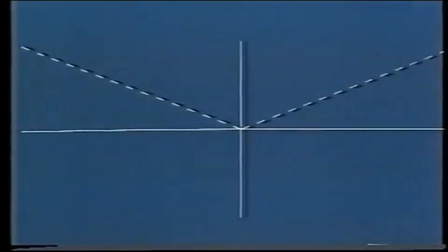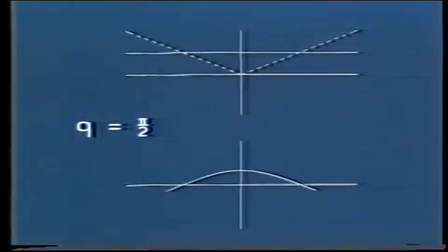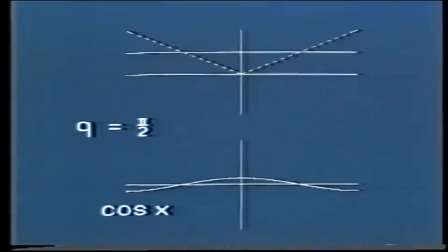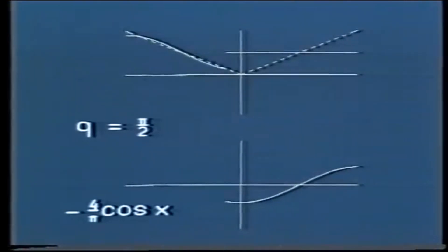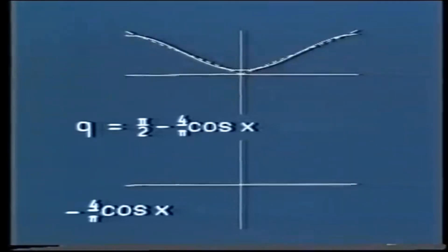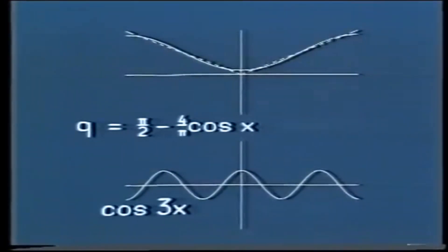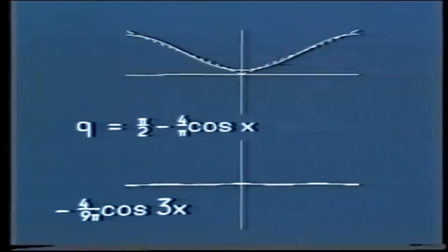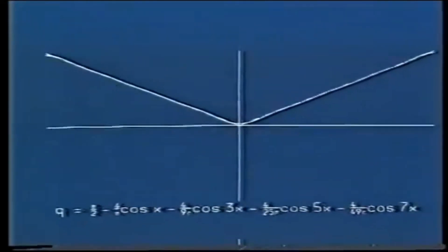So this is our expression for q, approximating the function mod x. Let's see what it looks like. This is the function mod x, and this is a first approximation: pi over 2 times the function 1. A function orthogonal to this is cos x. Multiply by minus 4 over pi, the Fourier coefficient. Adding gives a better approximation — the one we had before. The next function with a non-zero Fourier coefficient is cos 3x, with coefficient minus 4 over 9 pi. Adding as before gives an even better approximation. We can keep going with additional orthogonal functions. These five terms give this approximation for mod x.